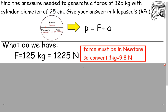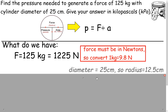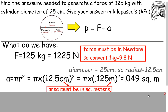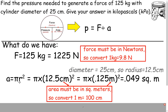Now to find the area, we have a diameter of 25 centimeters, so that gives us a radius of 12.5 centimeters. But we have to have our area in meters, so it's easier to convert the centimeters to meters first before you square it. Area equals pi r squared — pi times 12.5 centimeters. There are 100 centimeters in a meter, so if we divide by 100 and move the decimal place over 2, we end up with 0.125 meters. Taking 0.125 meters and squaring it times pi, we get 0.049 square meters.